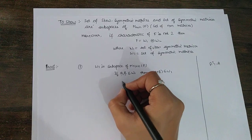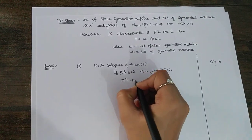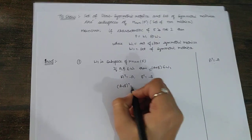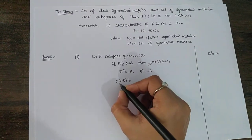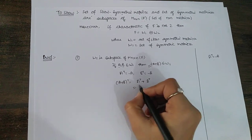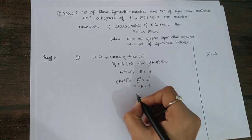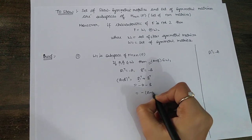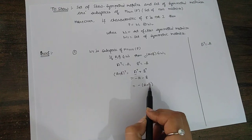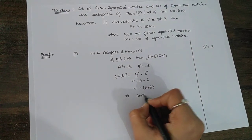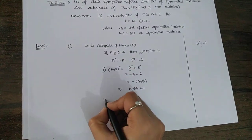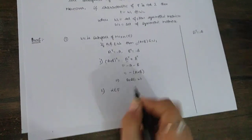Since A and B are in W1, we have A transpose = −A and B transpose = −B. Now consider (A + B) transpose. We know that the transpose of a sum of two matrices is A transpose plus B transpose, which equals −A + (−B) = −(A + B). So (A + B) transpose = −(A + B), which means A + B is in W1. The first condition is satisfied.